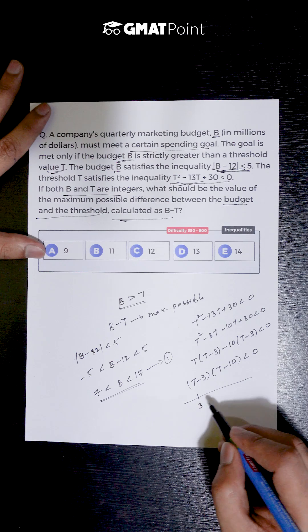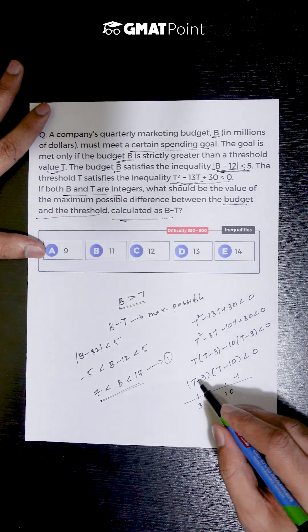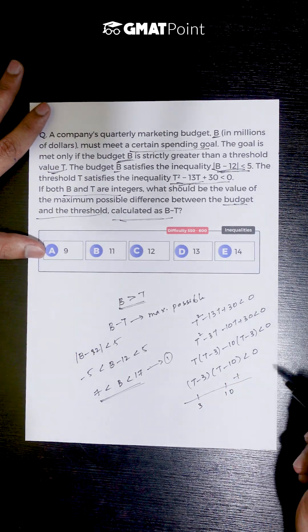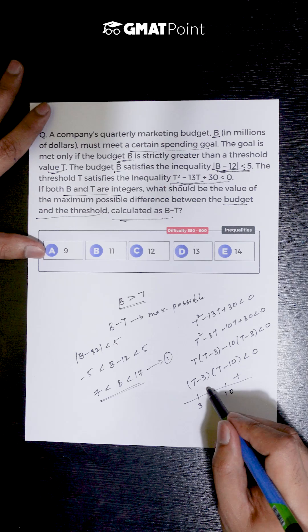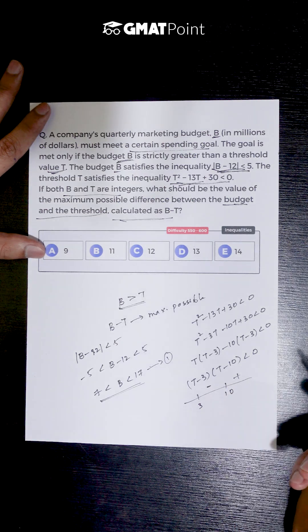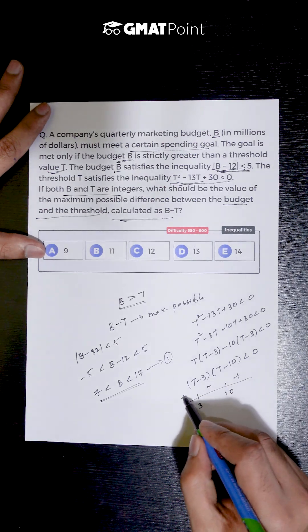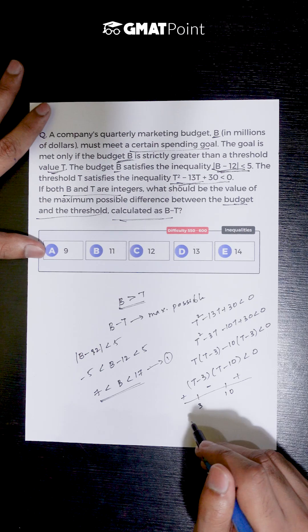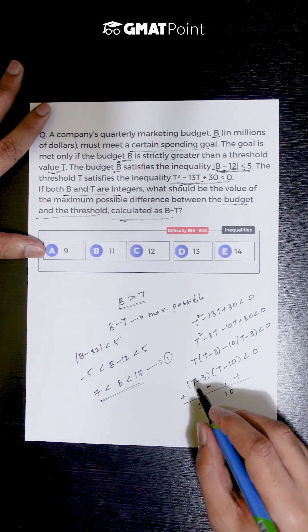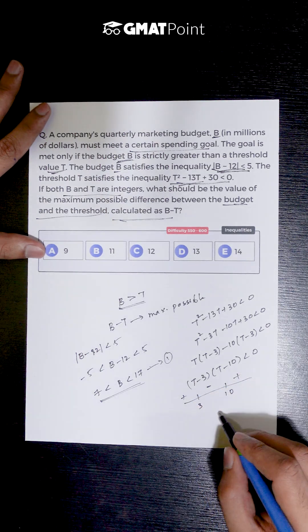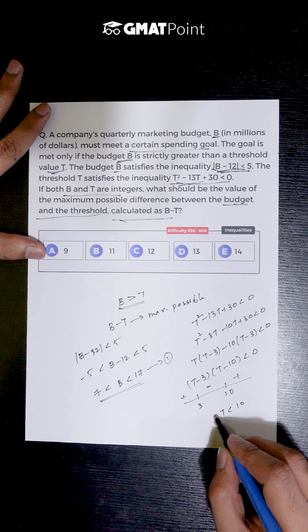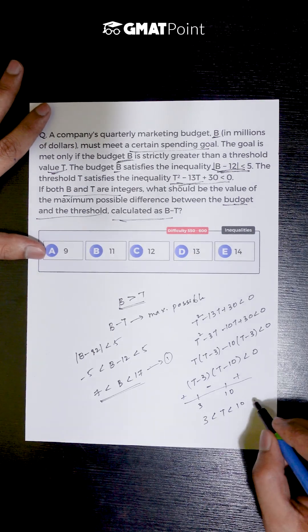Now, plotting the points on the number line, we will have this inequality value to be greater than 0 for all values greater than 10 and less than 0 for values lying between 3 and 10, again greater than 0 for all values of T less than 3. So the only values of T that satisfy this inequality are those lying between 3 and 10.